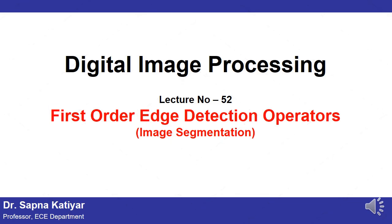Welcome to the video lecture series on digital image processing. Today's topic is first-order edge detection operators. We are studying image segmentation, where an image needs to be partitioned into smaller regions. This partitioning can be done depending upon the similarity principle or on the discontinuity. Accordingly, there are three types of discontinuities in any image: point, line, and edge. Today I will discuss first-order edge detection operators.